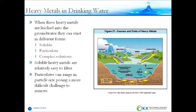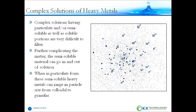When these metals leach from the electronic devices, they can exist in different forms. Depending on the pH and water conditions, the metals can be released as soluble metal in the water and become ionic. They can remain in the metal form and be released as particulates, or they can form complex solutions that contain both soluble and insoluble components. The particle sizes of the particulates can range from colloidal to granular. The complex solutions can be very difficult to filter, as the particulates can go in and out of solution.